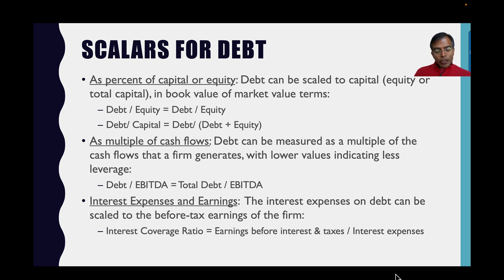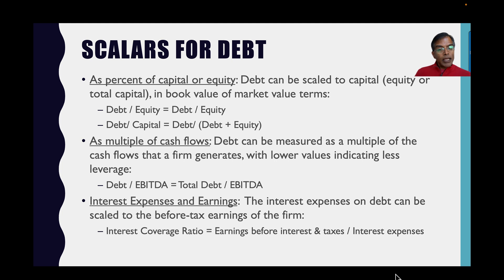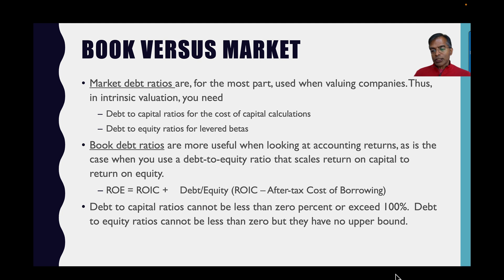I can also look at the interest expense portion of debt and scale it to the earnings of a company. This is called an interest coverage ratio, where you take earnings before interest and taxes (EBIT) and divide by interest expense. Those are the three key scalars you'll see me report.